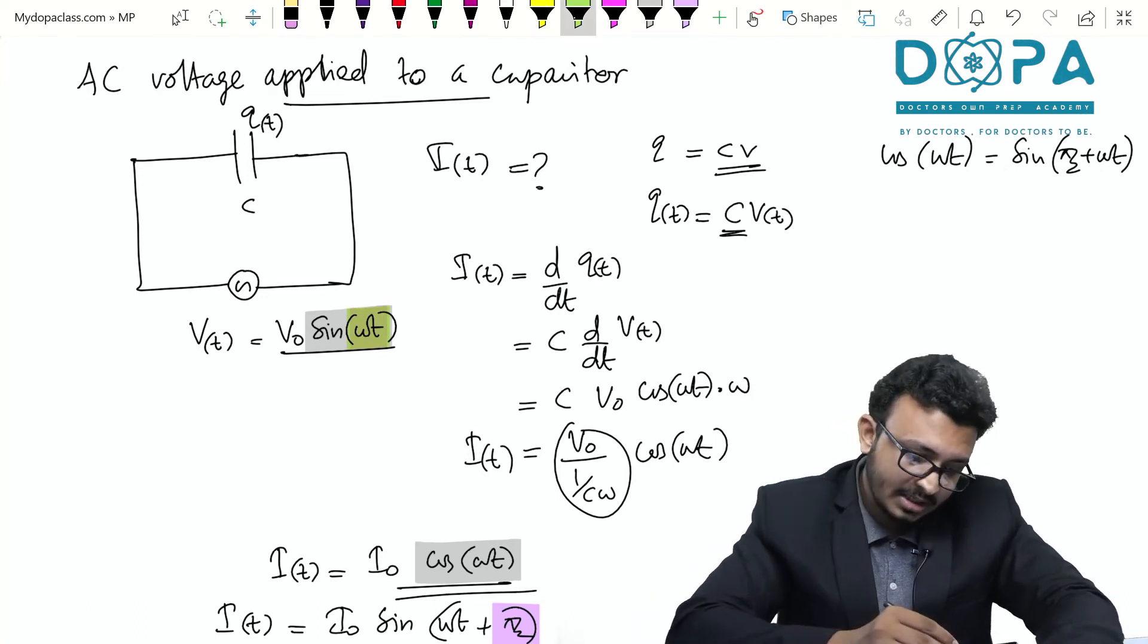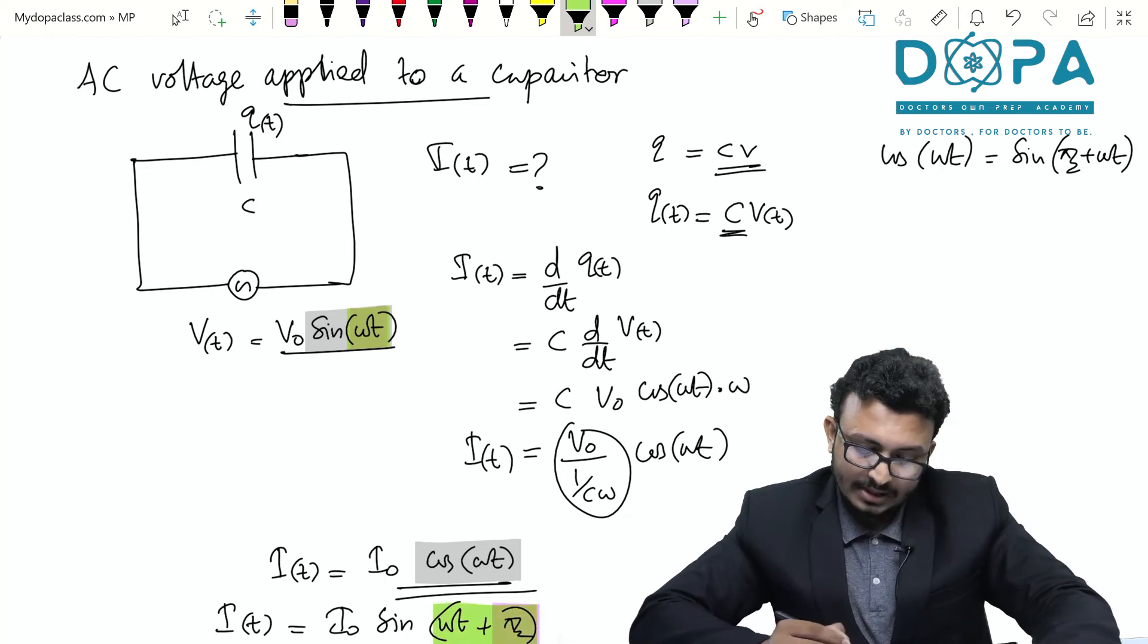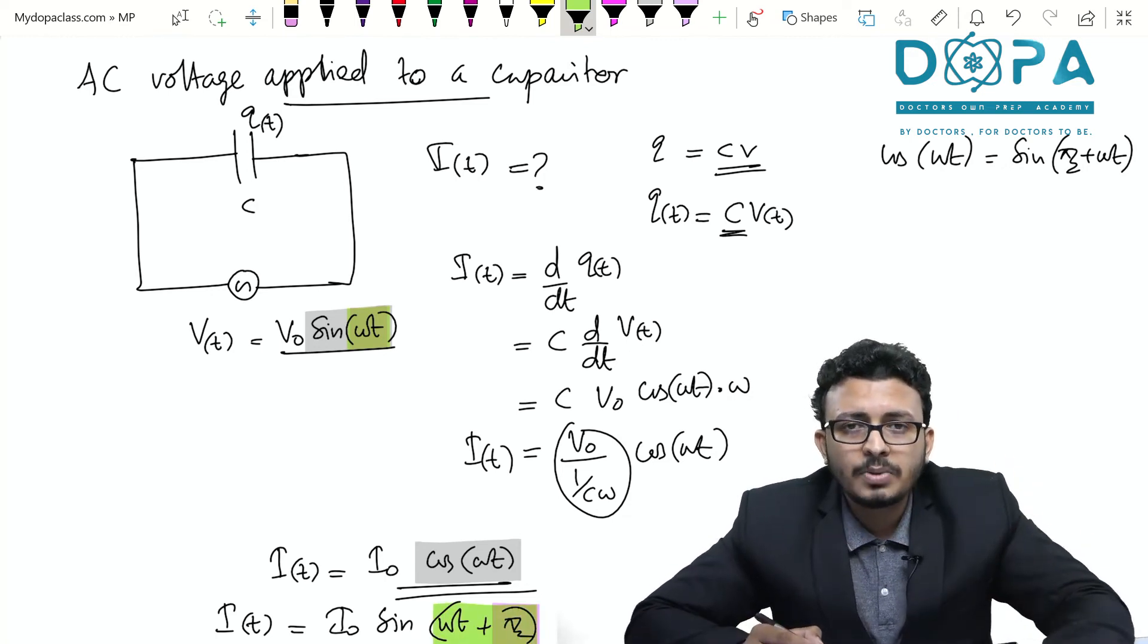Look at the phase of the voltage and current. The phase of the voltage is ωt but the phase of the current is ωt + π/2.